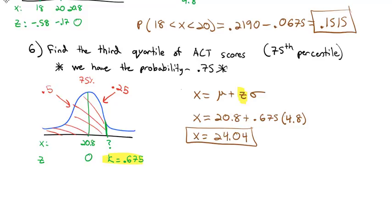The normal distribution is truly the most important distribution in all of probability. You need to know how to use the table — how to find the left side, the right side, what's in the tail, what's in the middle, how to find percentiles, and how to use the table backwards. Take a look at the homework assignment and practice these important problems. In class, we'll keep working with the normal distribution.